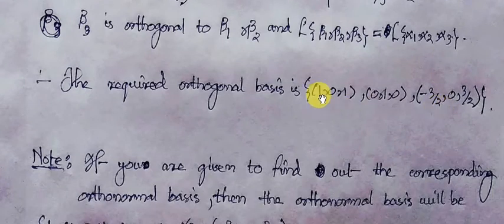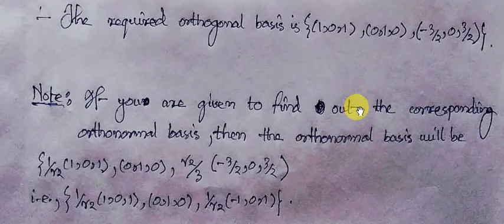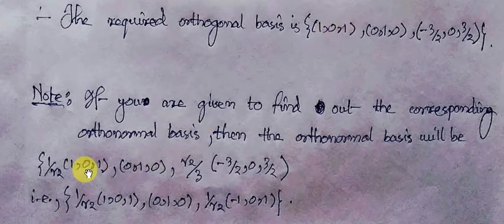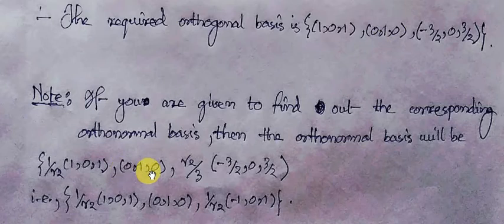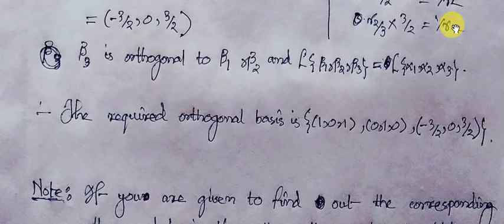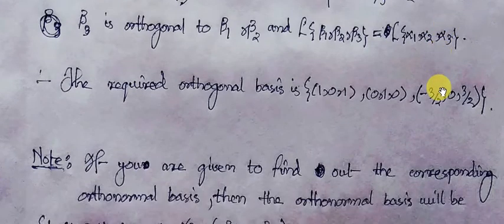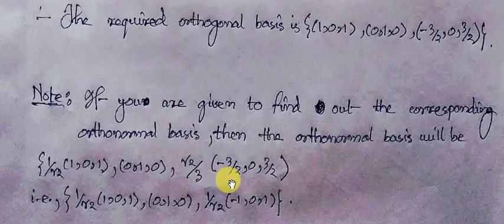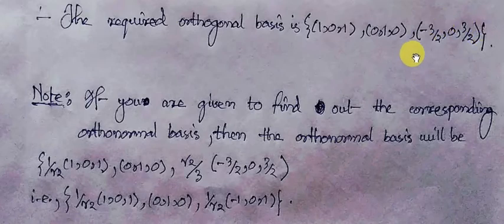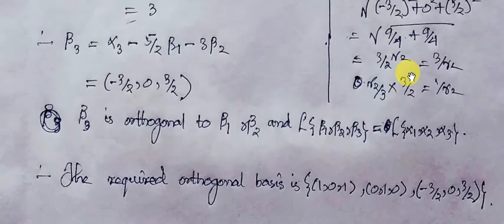If we divide each vector by its norm, we shall have the orthonormal collection. The norm of the first vector being root 2, we divide it by root 2. The norm of the second vector being 1, we divide it by 1. And we have divided the third vector by 1 over root 2.